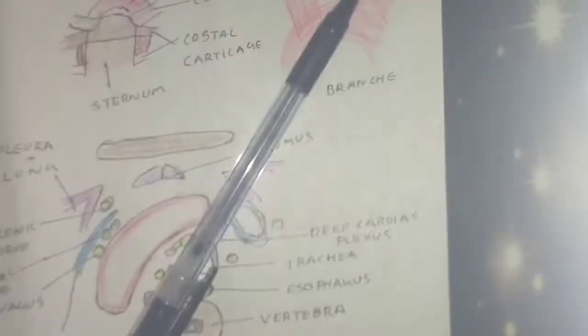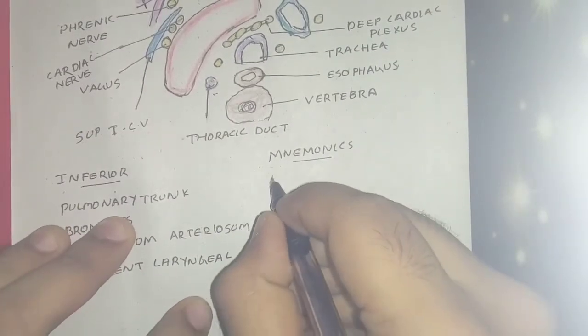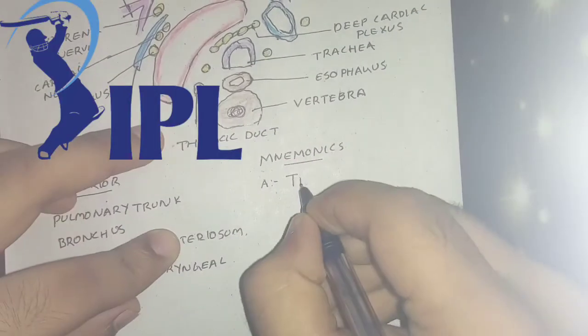For the branches, the brachiocephalic artery divides into common carotid and right subclavian artery, and left common carotid and left subclavian artery are the branches. Now for the mnemonic, all of you know about the IPL.